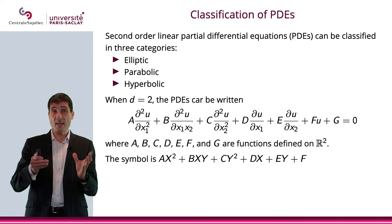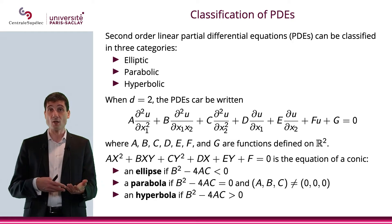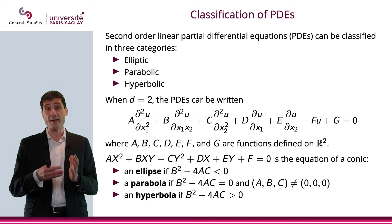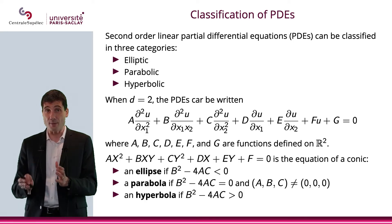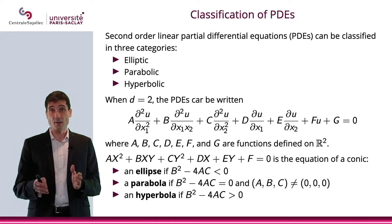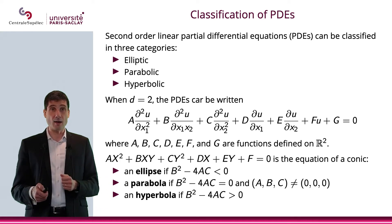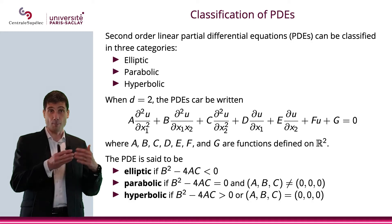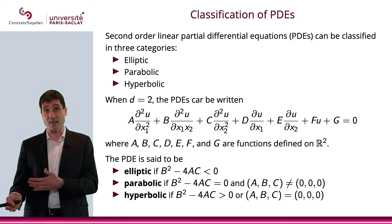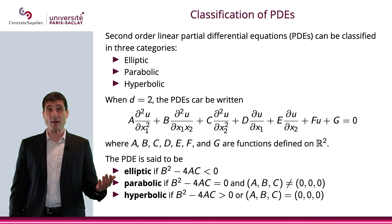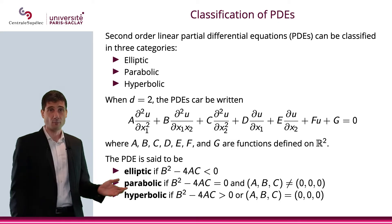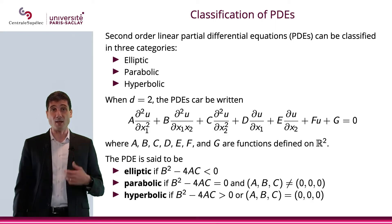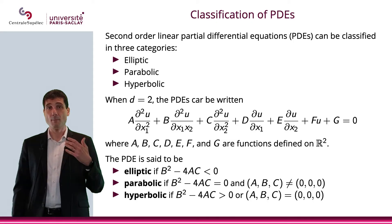Setting that symbol equal to zero gives the equation of a conic section. Depending on B² − 4AC, that conic section will be an ellipse, a parabola, or a hyperbola. We say the PDE is elliptic if B² − 4AC < 0, parabolic if B² − 4AC = 0 (provided A, B, C are not all zero), and hyperbolic if B² − 4AC > 0.